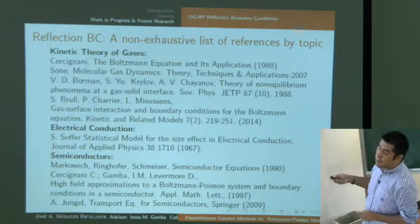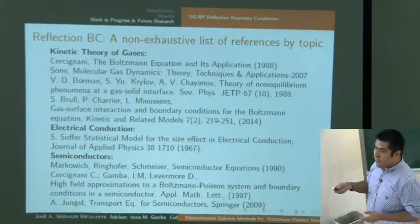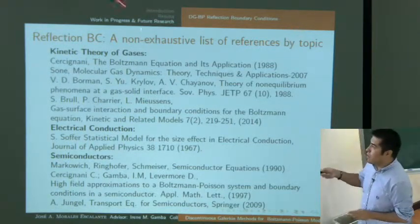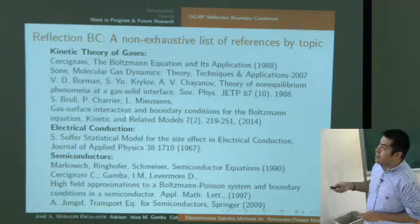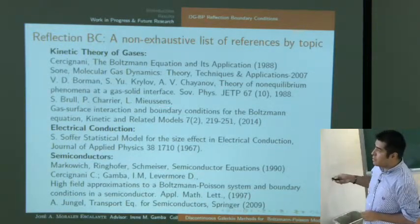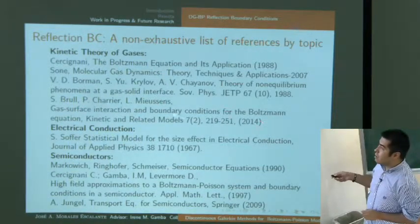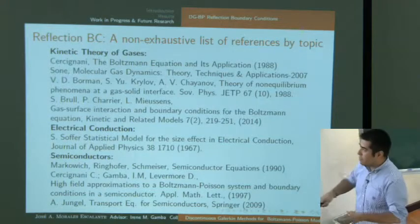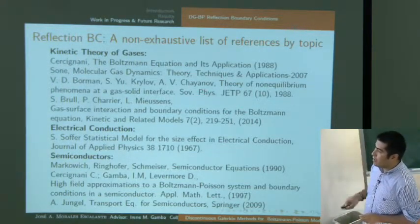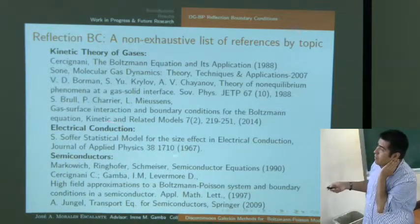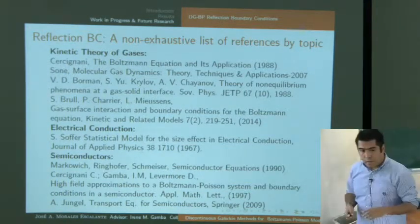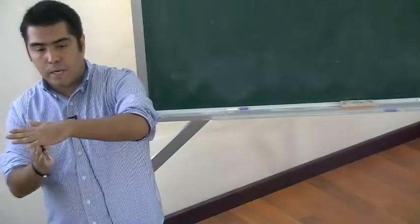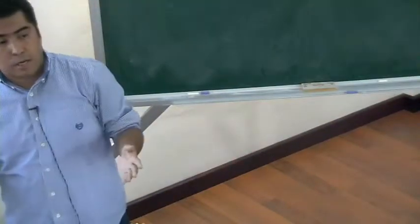Specular, diffusive, and mixed reflection are studied across various applications in kinetic theory of gases, including books by Cercignani and Sone, and recent work by Brull, Charguet, and Musion on diffusive reflection at nanoscales. For semiconductors, relevant references include the book by Markowich, Ringhofer, and Schmeisser on boundary conditions, a paper by Cercignani, Gamba, and Levermore on field approximations with boundary conditions for different moments, and the Jungel book on transport equations for semiconductors. The physical motivation is surface roughness — the reflection is not perfectly specular on rough material surfaces.